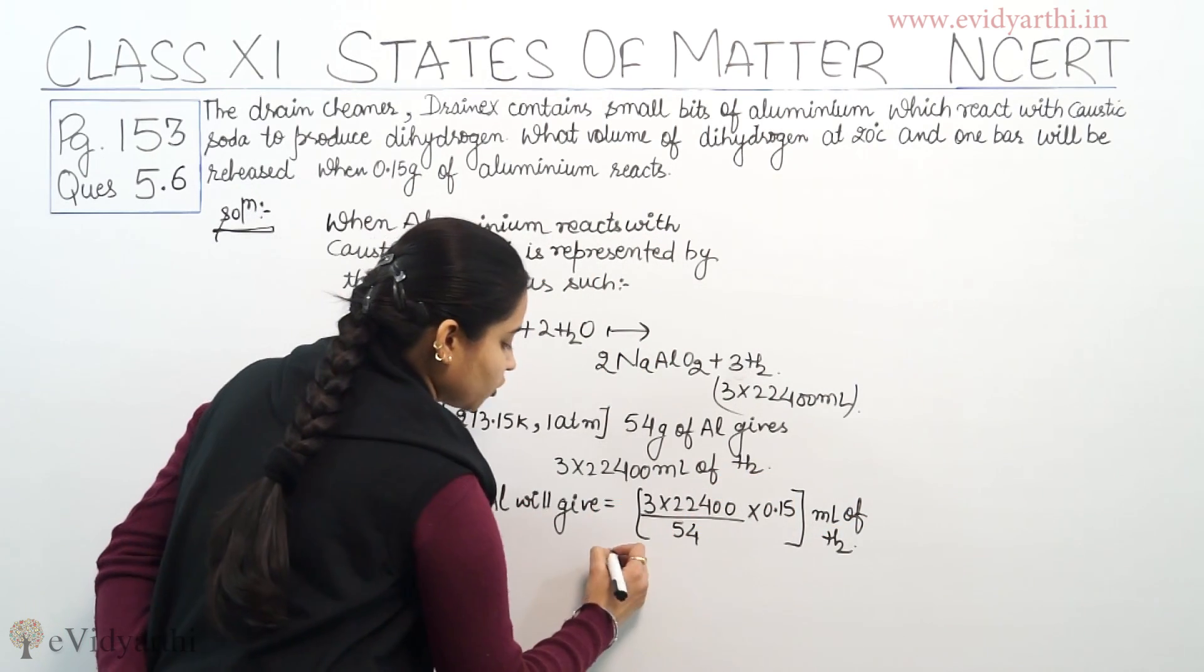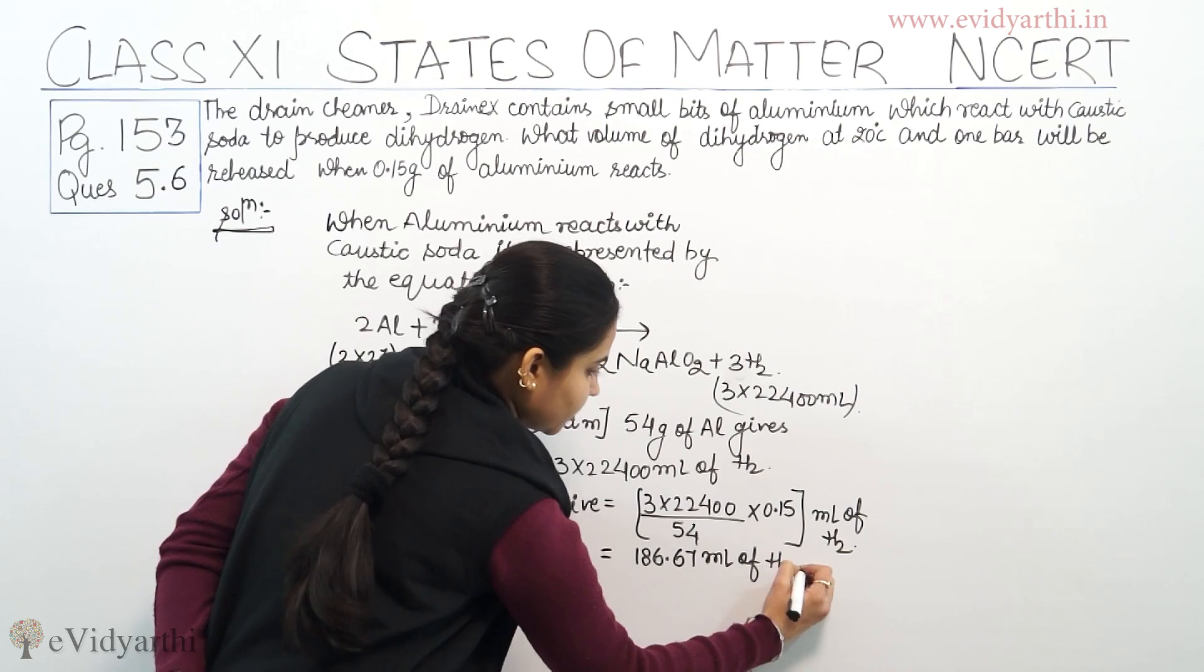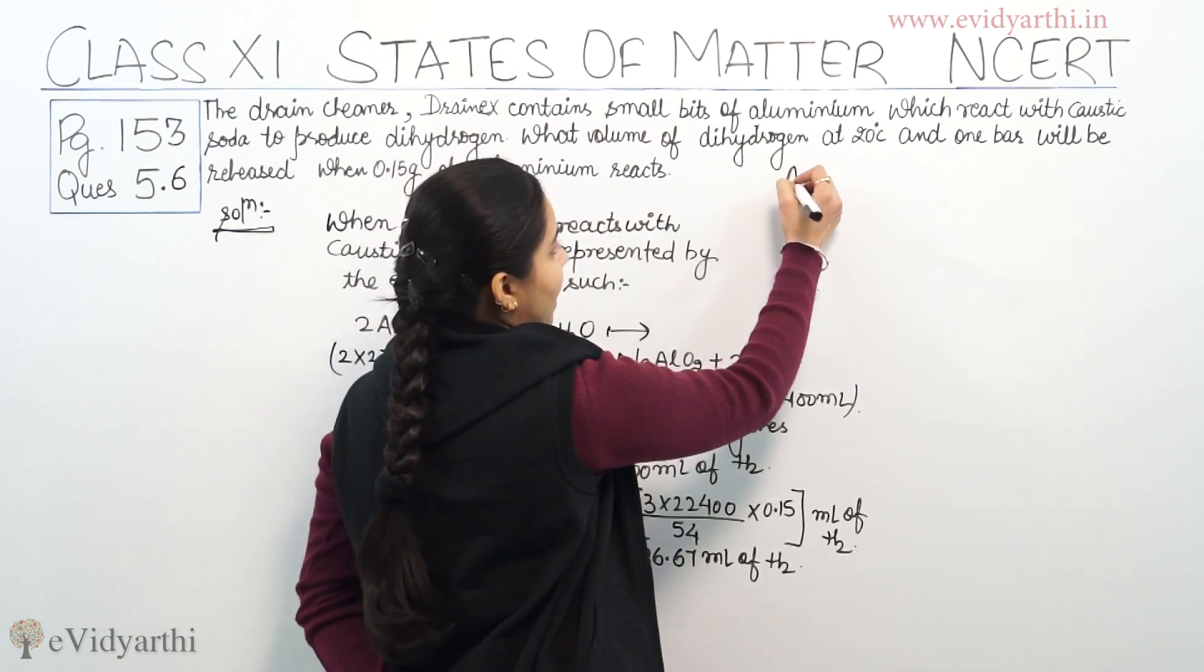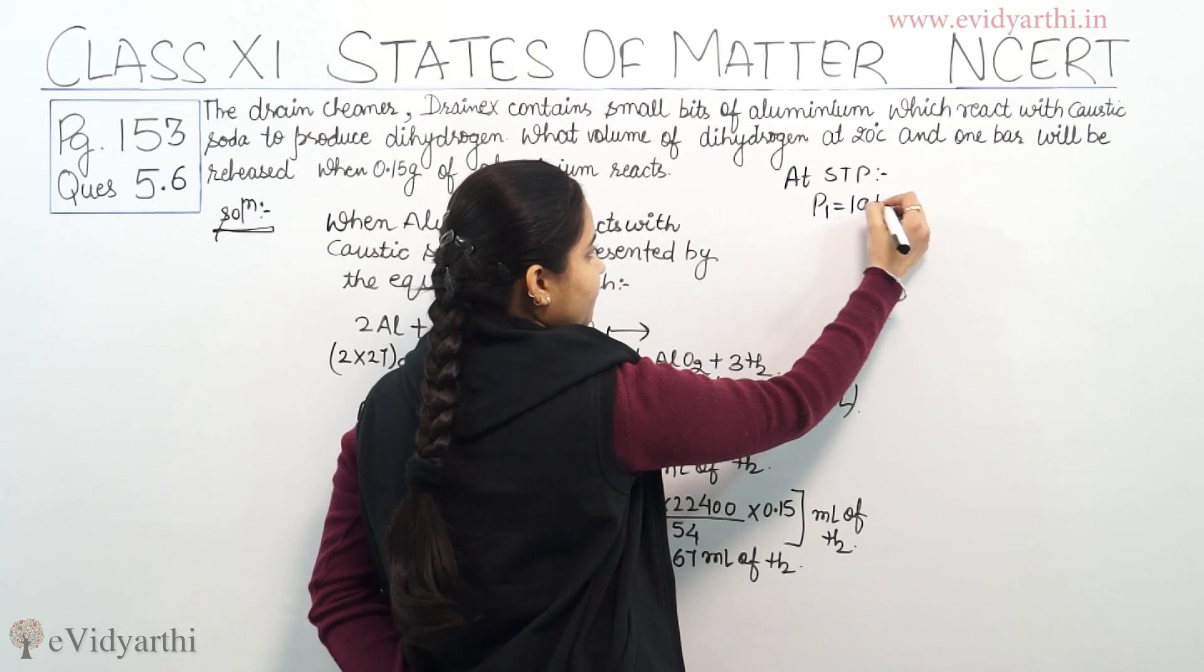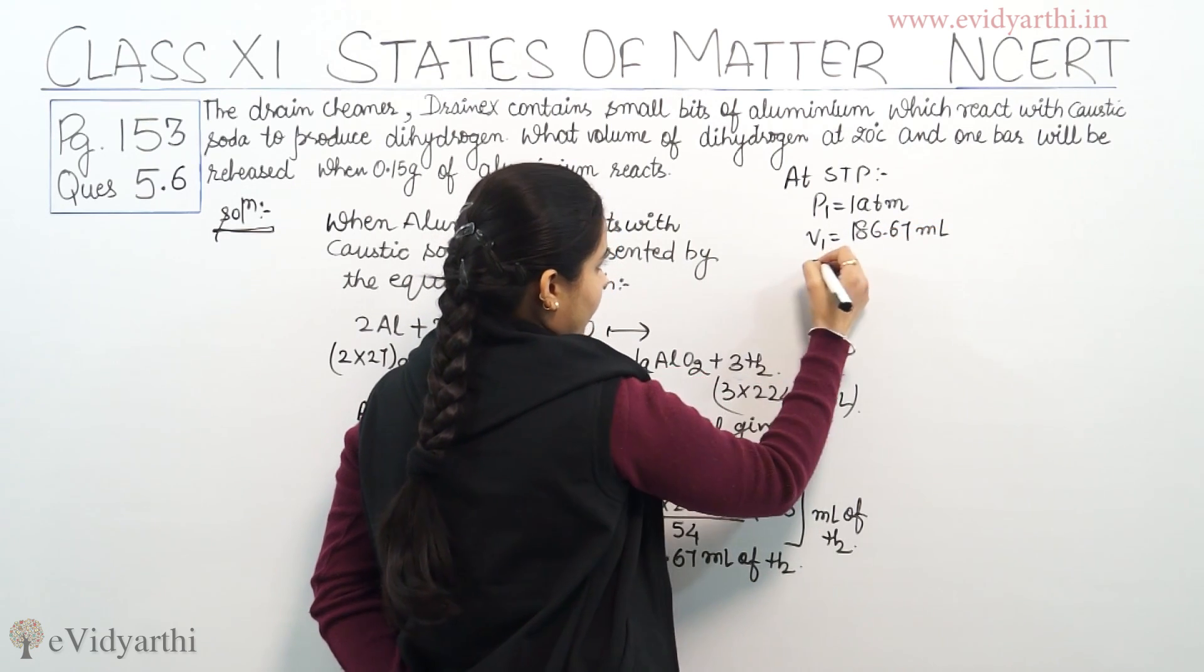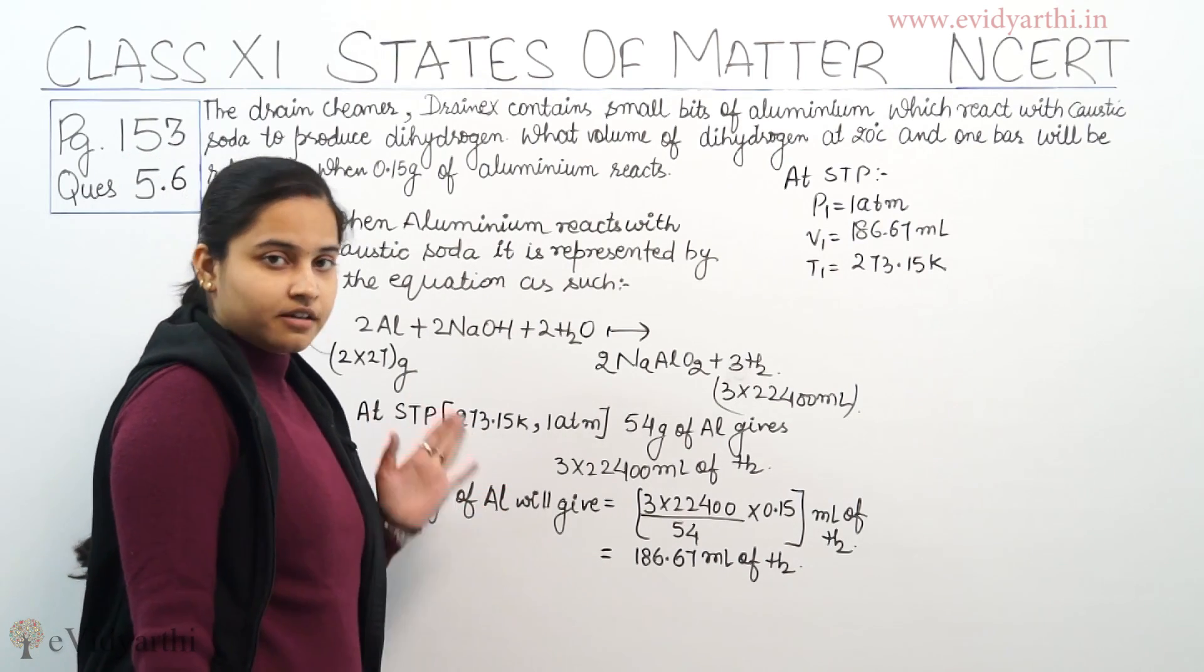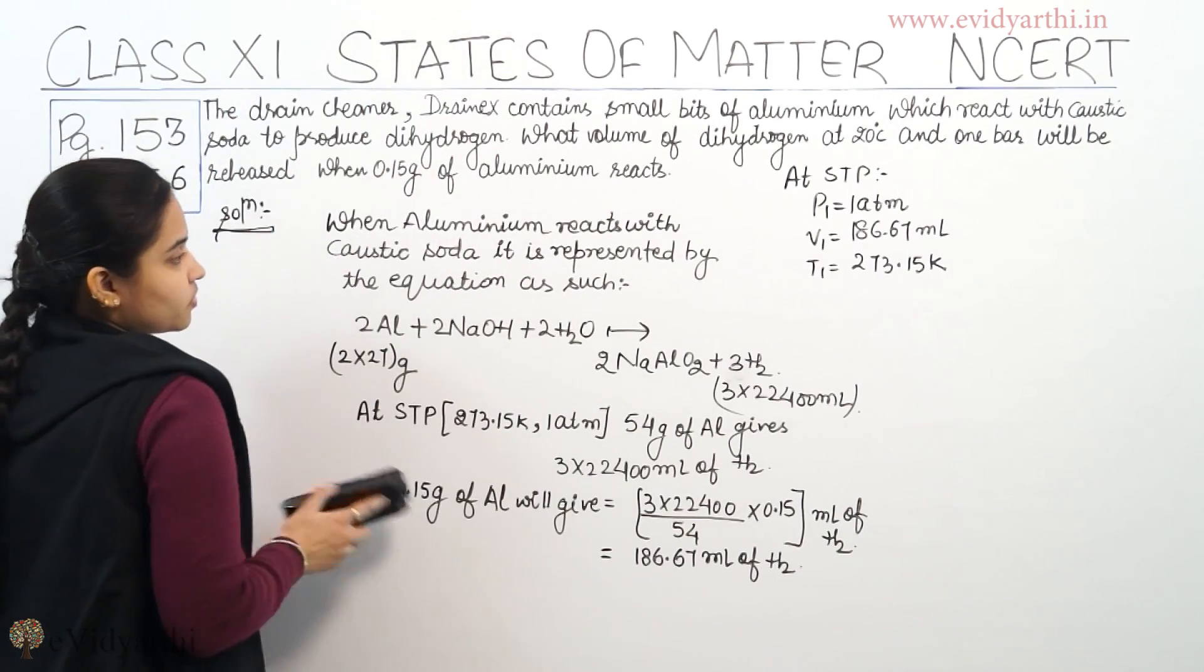So when we calculate this, our answer is 186.67 ml of dihydrogen. So 0.15 grams of aluminium will give 186.67 ml of dihydrogen. So I can say that at STP, P1 equals 1 atm, V1 equals 186.67 ml, and T1 equals 273.15 Kelvin. These all the values are at standard temperature pressure. After here, I will be moving further for solving the question.